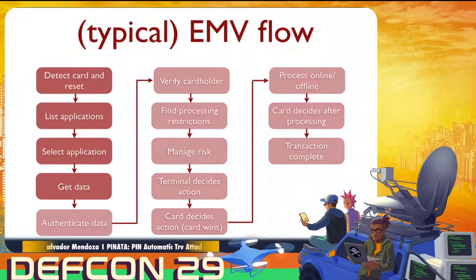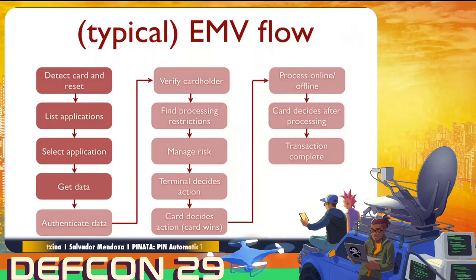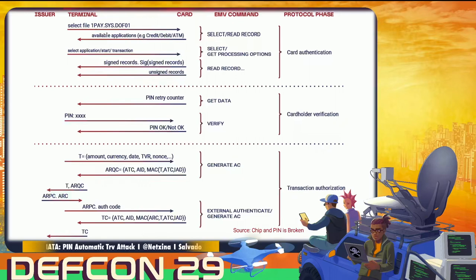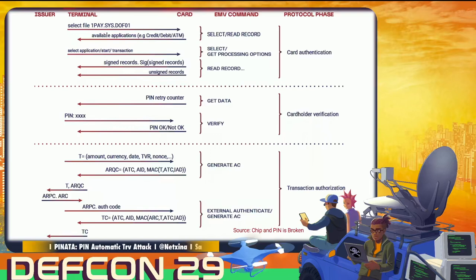When the card is inserted into the terminal, it's going to be detected, reset, and the applications will be listed. There will be different steps until the transaction is complete. During these steps, one of the most important is whether the transaction is going to be processed online or in offline mode, depending on different factors and of course the verification method. Looking at the terminal and card communication protocol phases, we have card authentication, cardholder verification method, and transaction authorization as the last phase.